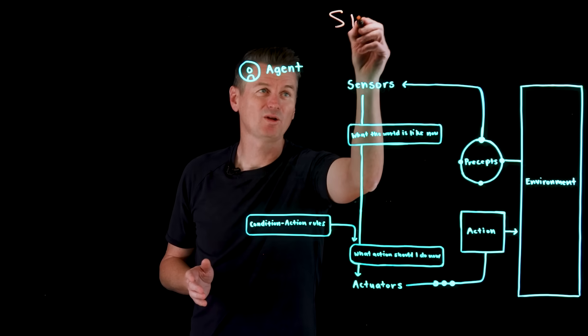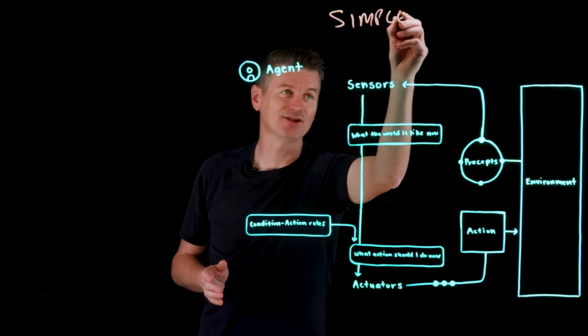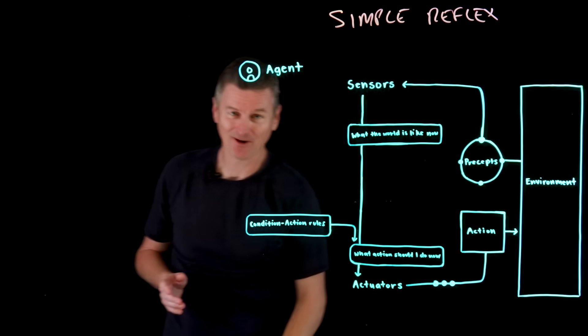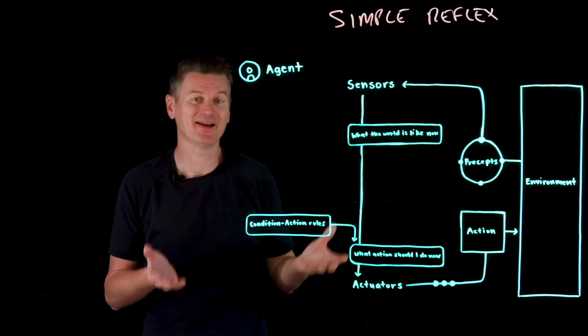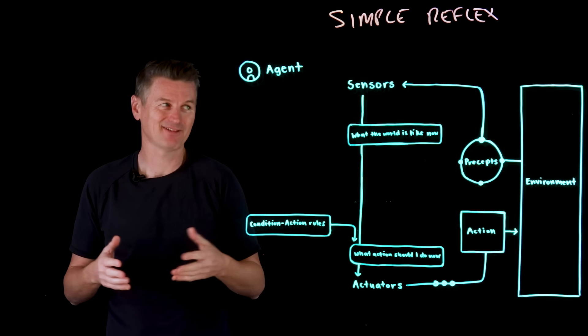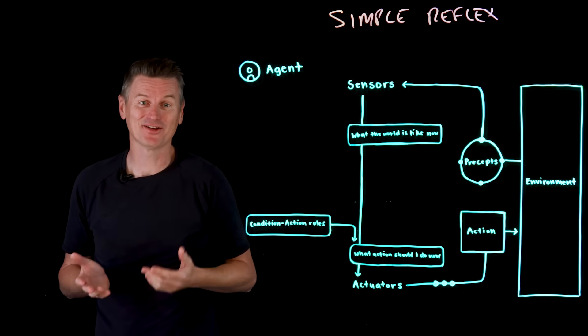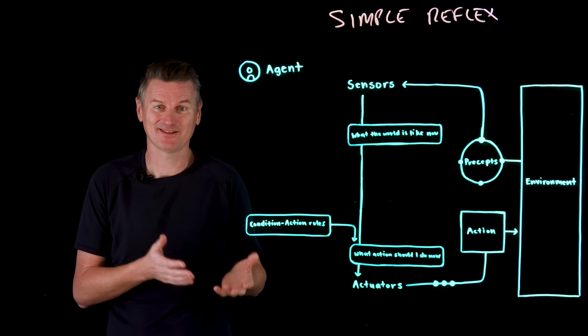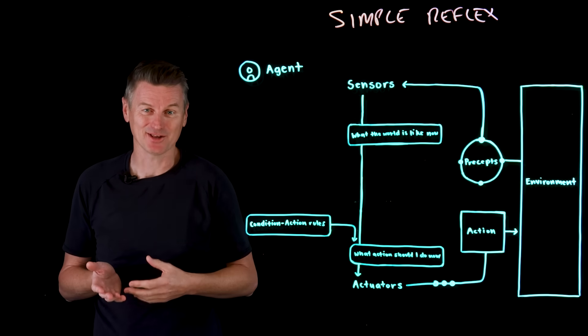A simple reflex agent is the most basic type of AI agent. It follows predefined rules to make decisions, like a thermostat. It turns on the heat when the temperature drops below a predefined threshold, and then it turns it off again when a set temperature is reached.